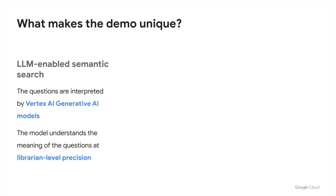The following points make this demo unique. First, it is an LLM-enabled semantic search. The 8 million Stack Overflow questions and query text are both interpreted by Vertex AI generative AI models. The model understands the meaning and intent, or semantics, of the text and code snippets in the question body at librarian-level precision. The demo leverages this ability for finding highly relevant questions, going far beyond simple keyword search in terms of user experience.